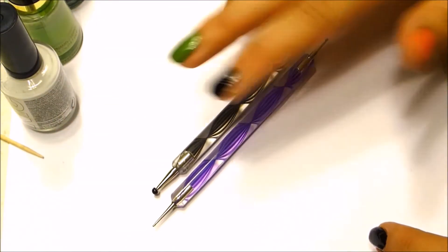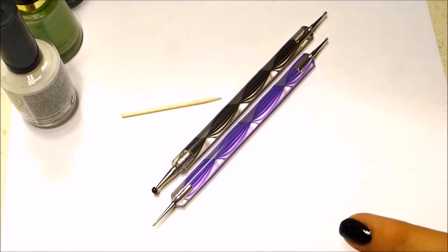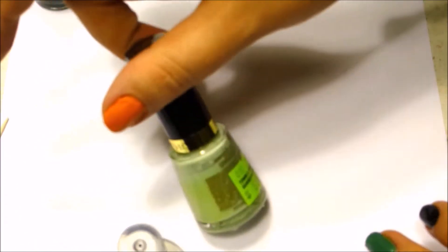Hey everyone, you're going to need a piece of paper and some dotting tools. If you don't have a dotting tool, you can use a toothpick with the end cut off, some white nail polish, and green nail polish.